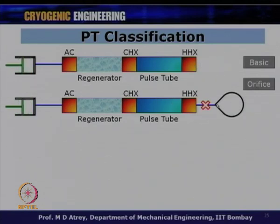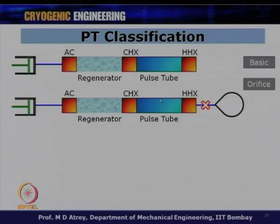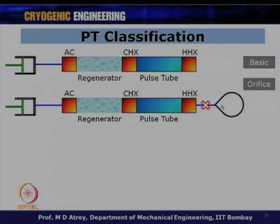In the BPTC, there is no orifice and no reservoir at the hot end. This is the original concept proposed by Gifford in 1963. Gas pressurized from the cold end hits the closed hot end wall and returns — so the mass flow rate at the hot end, ṁ_H, equals zero. For OPTC, which has an orifice and reservoir, gas flows through the orifice to a large reservoir with minimal pressure fluctuation — this is the OPTC mechanism.